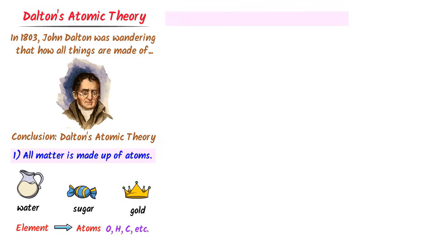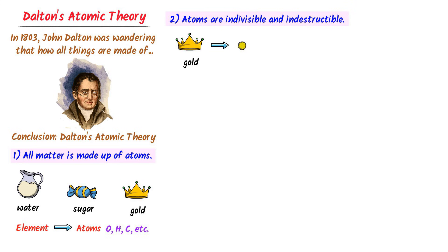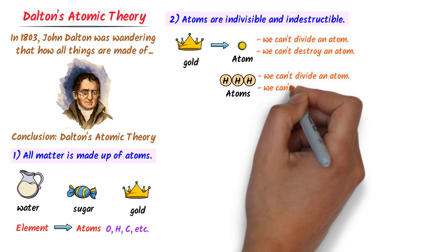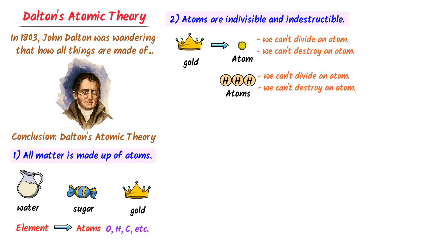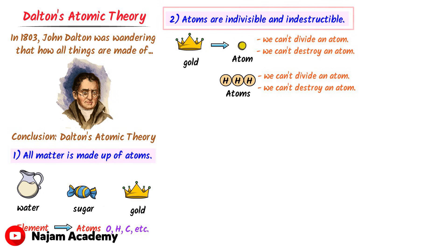Secondly, atoms are indivisible and indestructible. Consider gold. We can divide this gold into smaller pieces which we call atoms, but we cannot further divide the atoms of gold. Also, we cannot destroy these atoms of gold. Similarly, we cannot divide or destroy hydrogen atoms. That's why Dalton said that atoms are indivisible and indestructible.